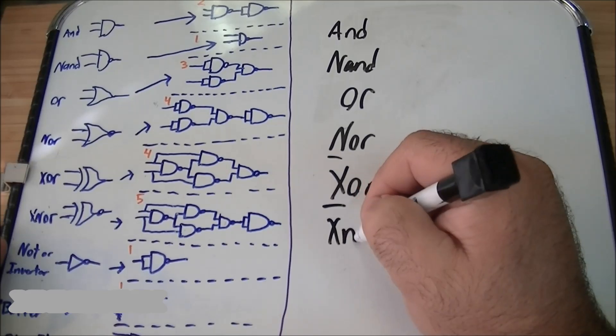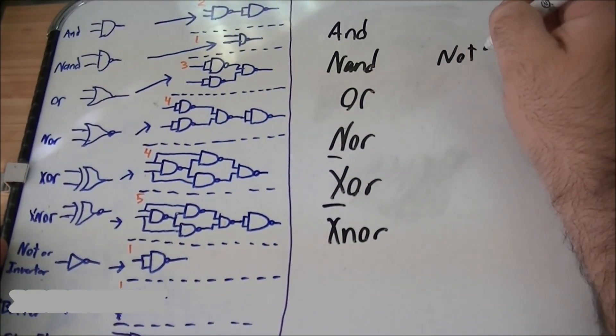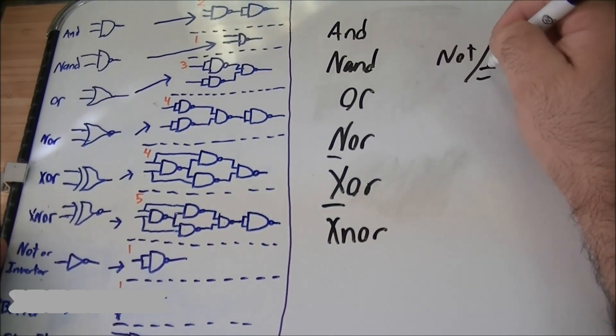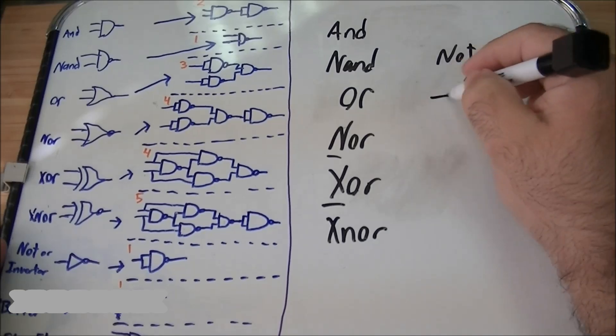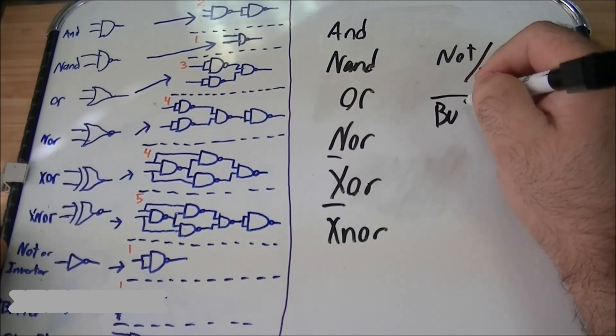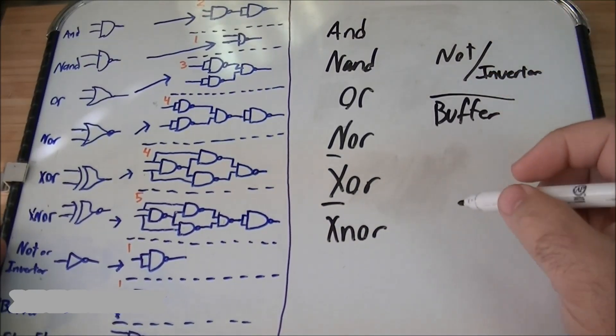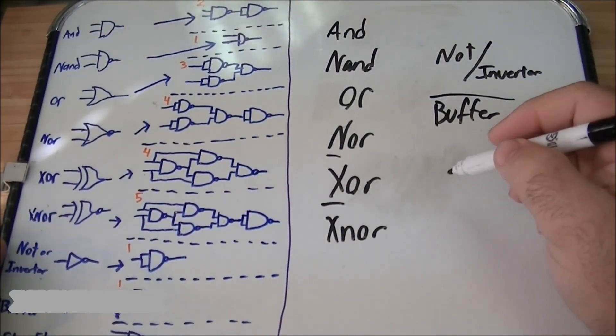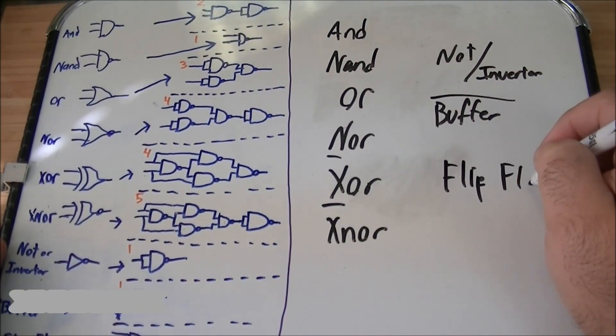NOR, which is NOT OR, XOR, which is exclusively OR, XNOR, even the NOT gate or what some people call the inverter, and the unpopular never-used buffer, which is just a repeater. And you can even do a flip-flop clock with a NAND gate.